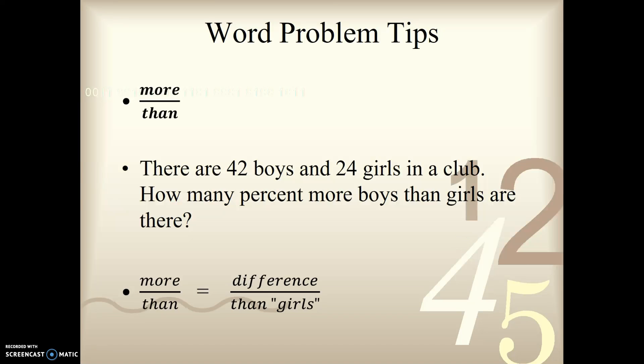Let's take a look now at more over than. Here's our example problem. There are 42 boys and 24 girls in a club. How many percent more boys than girls are there? So when I have a more over than problem, I'm really looking at the difference between the two things over the than. So since it says how many percent more boys, the first step is we need to figure out how many more boys than girls are there. So let's subtract 24 from 42, and we're going to get 18. So there are 18 more boys.